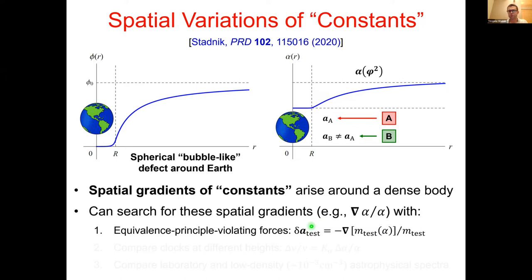One possibility involves accelerometry-style measurements. In the presence of a gradient in alpha, we expect additional anomalous accelerations on test bodies, because the overall masses of test bodies depend on the value of alpha — specifically, the mass of an atom receives a contribution from the Coulomb binding energy. If we have two different materials making up two test bodies, they will have slightly different relative Coulomb binding energy contributions, so they respond differently to the alpha gradient and fall at slightly different rates toward Earth's center.